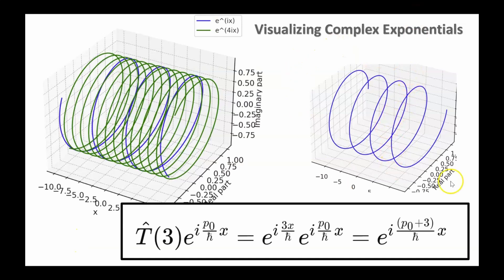Here's how you visualize the complex exponentials. The blue function here is a function with one momentum. Its momentum value is related to the number of turns per unit length — how tightly wound it is is how you interpret the momentum. I'm going to call this state e to the i p-zero h times x — that's the blue state.